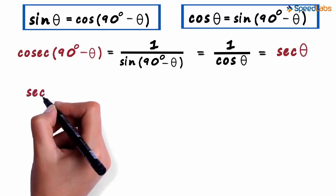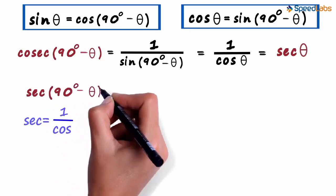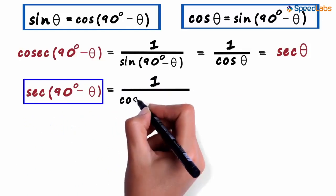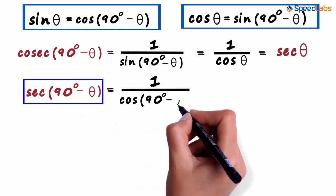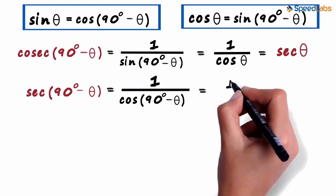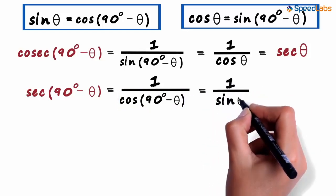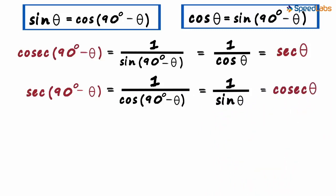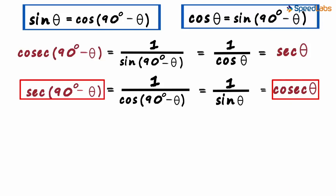What is sec(90° - θ)? Sec is the reciprocal of cos, so this will equal 1 by cos(90° - θ). From the first relation, we can see that cos(90° - θ) equals sine θ. This can be written as 1 by sine θ, and the reciprocal of sine θ is cosec θ. This derivation tells us that the cosecant of any angle is equal to the secant of its complementary angle.